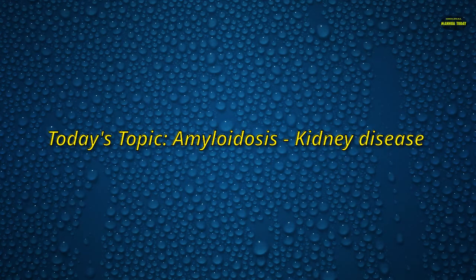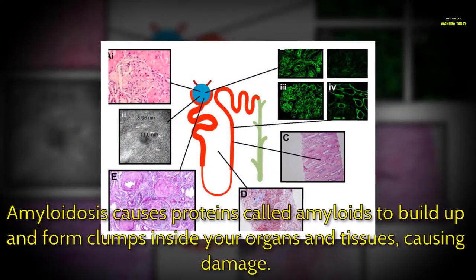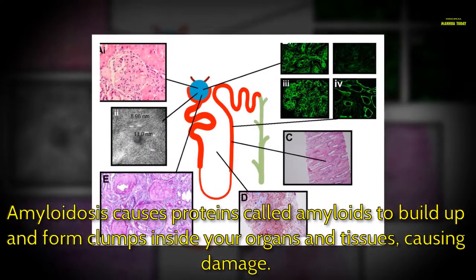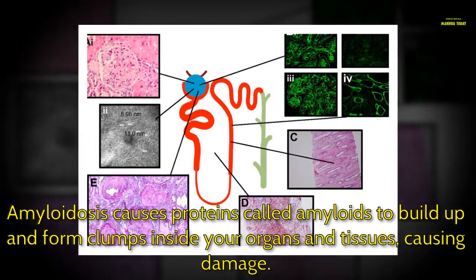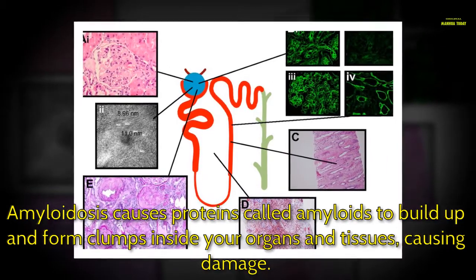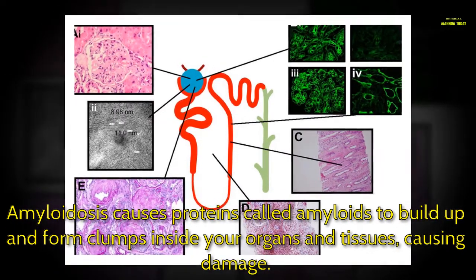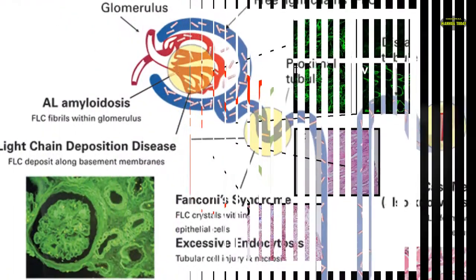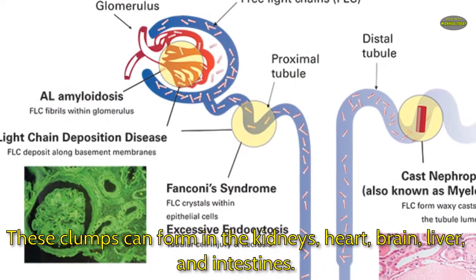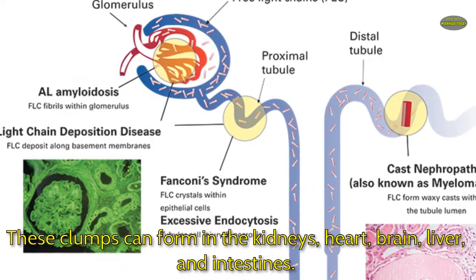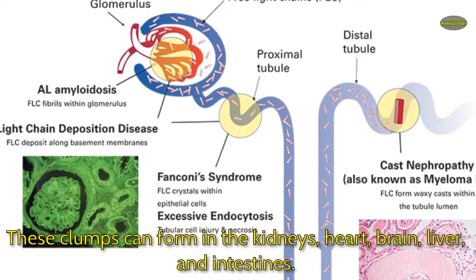Today's topic: amyloidosis kidney disease. Amyloidosis causes proteins called amyloids to build up and form clumps inside your organs and tissues, causing damage. These clumps can form in the kidneys, heart, brain, liver, and intestines.